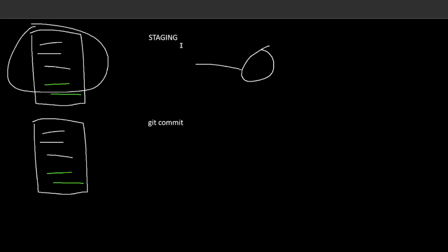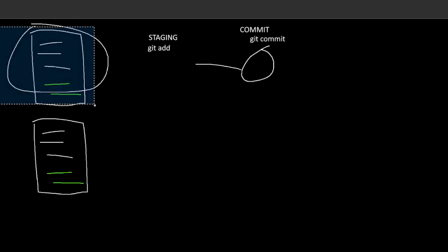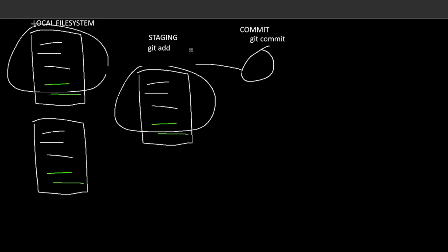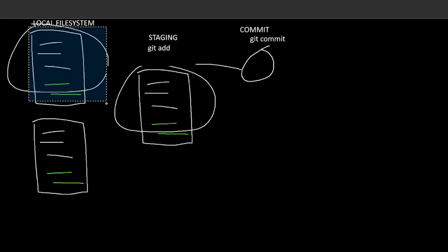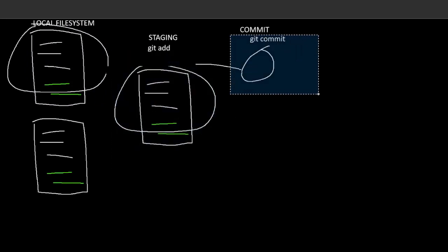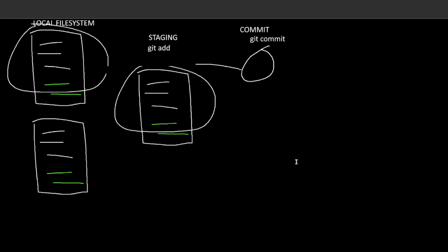Staging is done via git add, followed by git commit. Say you want to stage something — you can do git add, and it puts it into a special place called staging. This is your local file system, and this is staging. When you do git add, it copies the file from your local file system to staging. And once the thing is in staging, you can commit it. You can see this when you run git status.